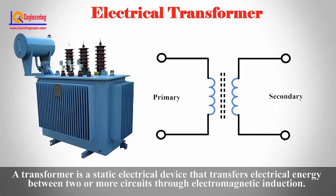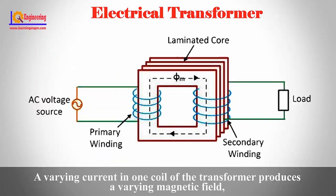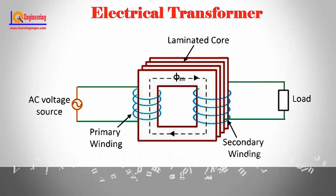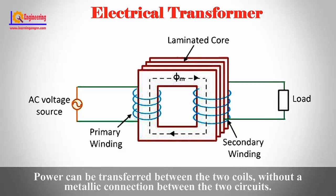A transformer is a static electrical device that transfers electrical energy between two or more circuits through electromagnetic induction. A varying current in one coil of the transformer produces a varying magnetic field, which in turn induces a varying electromotive force or EMF in the second coil. Power can be transferred between the two coils without a metallic connection between the two circuits.